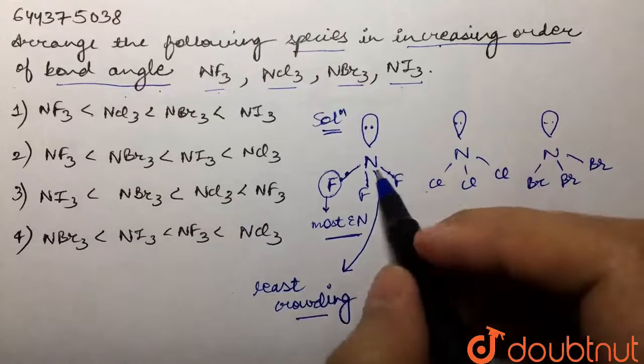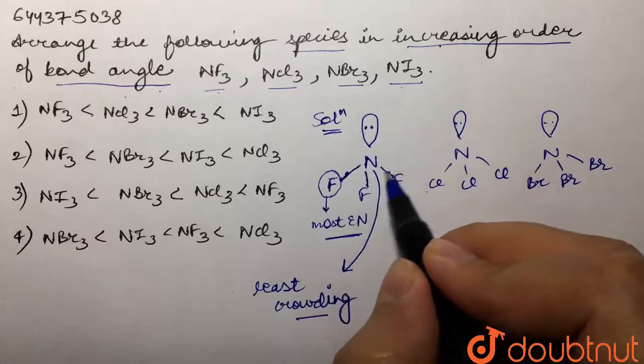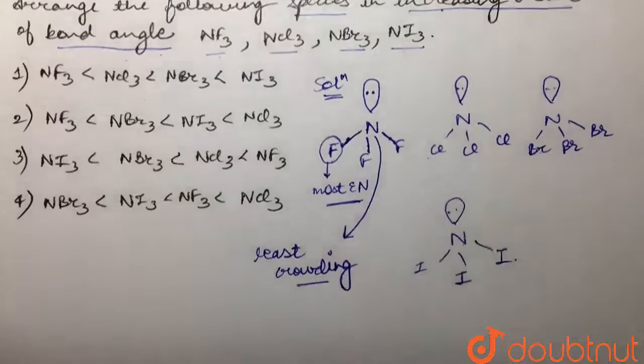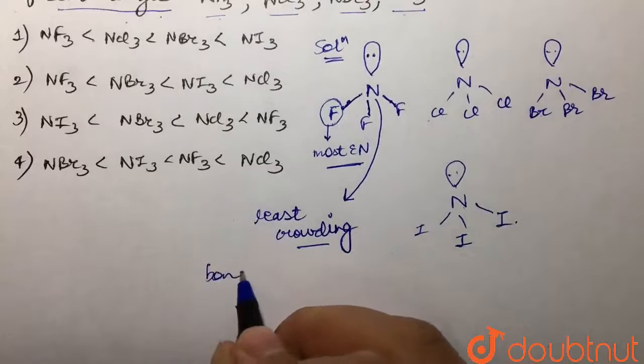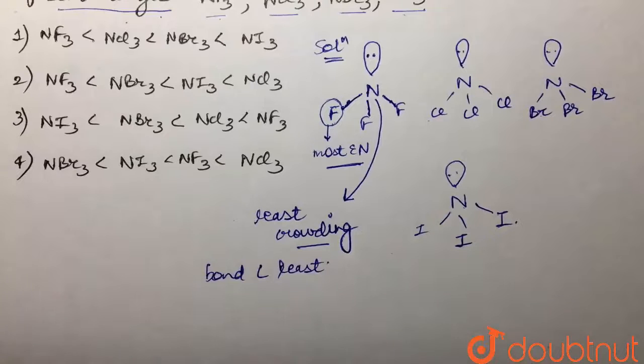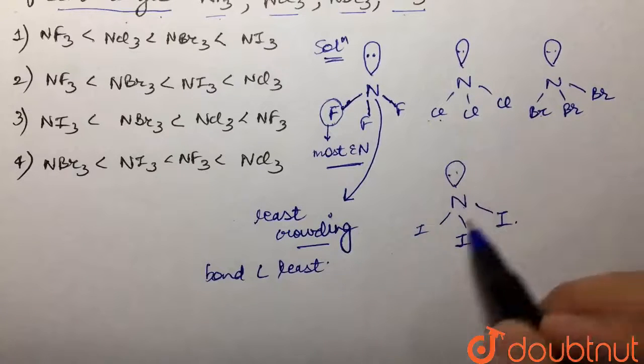There would be least repulsion between these bonds, and hence the bond angle would be least in this case. Now as we move to chlorine, bromine, and iodine, the electronegativity is decreasing.